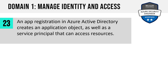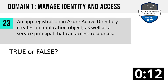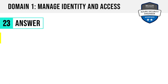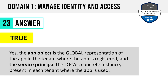Question 23. An app registration in Azure Active Directory creates an application object as well as a service principal that can access resources. True or false? When we create an app registration in Azure Active Directory, are we actually creating two objects or just one? The answer is true. The application object is a global representation of the app in the tenant where the app is registered, and the service principal is the local concrete instance present in each tenant where the app is used. Think of the app object as a template of sorts.